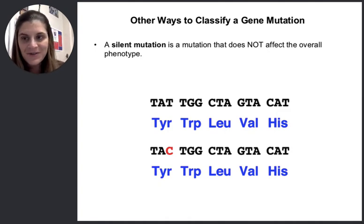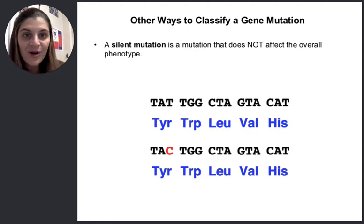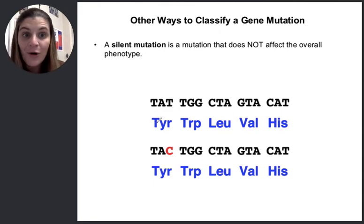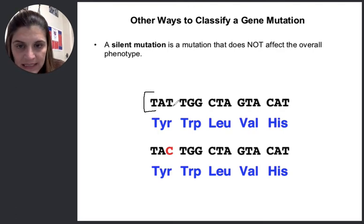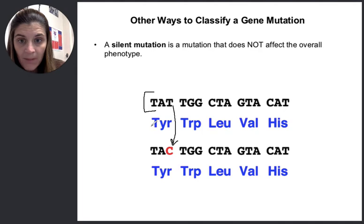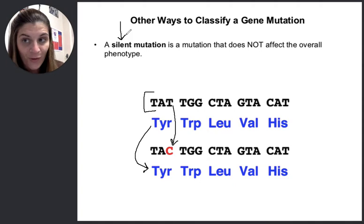So other ways we can classify a gene mutation. The first one is when we get lucky because it is called a silent mutation — nothing happened to the overall phenotype or the overall protein. Take a look: we're looking at DNA here and it looks like we've mutated the T to a C. Because we've altered the RNA as well, luckily we didn't change our amino acid — it's still tyrosine. So that's what we call a silent mutation, meaning there was a DNA mutation but it did not result in a change in the amino acid. Kind of like no harm, no foul.